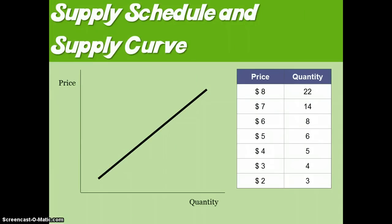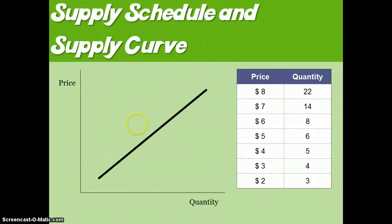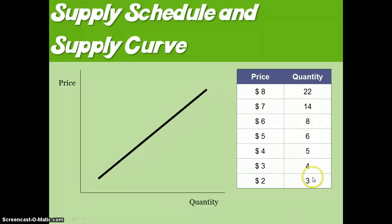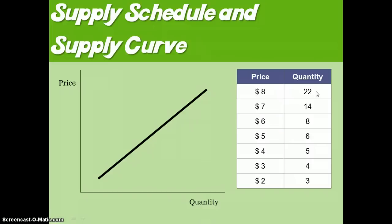Supply is very much like demand. It has a curve and it has a schedule to it, just like there was a demand schedule. We can look at suppliers and say if the price of a good was $8, I'd supply 22 units of it. If it was $7, I would supply less. If it was $6 a unit, I'd supply 8, and so on. So you can begin to see that there is a positive correlation between price and quantity — as price goes up, the quantity supplied will also go up.